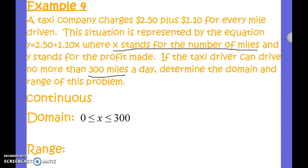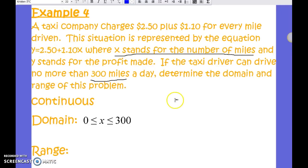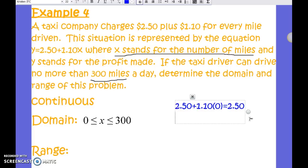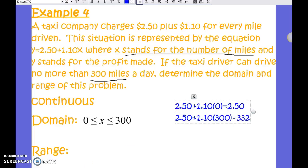To find the range, I'm going to use the equation given in the problem: y equals 250 plus 1.10x. To figure out my y values, I'll plug in the x values from my domain. My first x value is zero, so I plug in zero and get 250. So the lowest y value for my range is 250. To find the highest value of my range, I plug in 300: 250 plus 1.10 times 300, which equals $332.50.